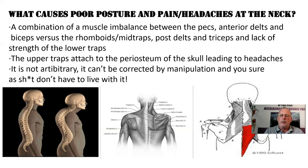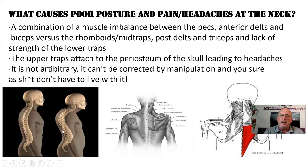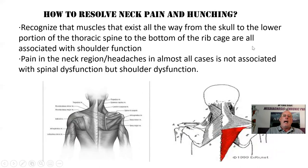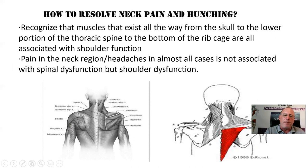You don't have to live like this — that's the most important point. Especially if you're older, stop thinking this is related to aging. It can be easily remedied. To resolve neck pain and hunching, you must recognize that the muscles from the skull all the way down to the lower thoracic spine attach to the shoulder blade and are all associated with shoulder function. The upper traps and levator scapula run from the upper cervical region and skull down to the shoulder blade.